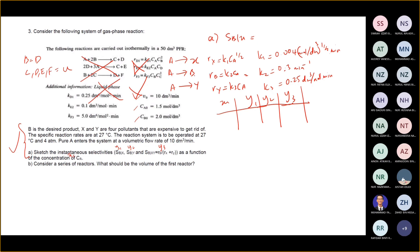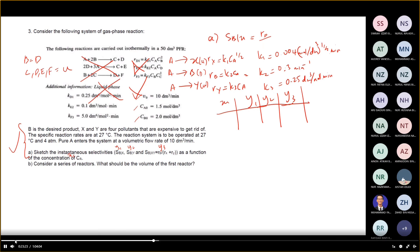So SBX — look at where B is. B is the desired product, and X is the undesired. From there, B and X — B is the desired, so we have R of the desired over R of the undesired, which is where X sits.